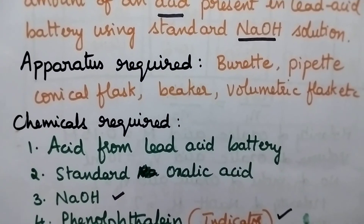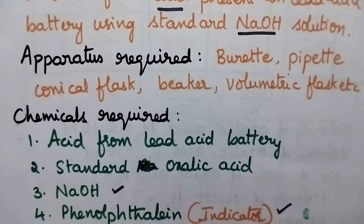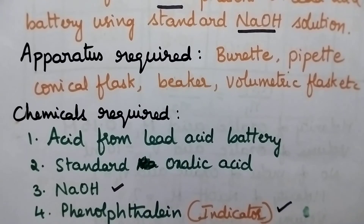Apparatus used are burette, pipette, conical flask, beaker, volumetric flask, etc. Coming to the chemicals, it involves the use of sulfuric acid from the lead acid battery, standard oxalic acid solution, NaOH solution, and phenolphthalein is used as the indicator.